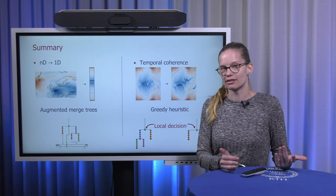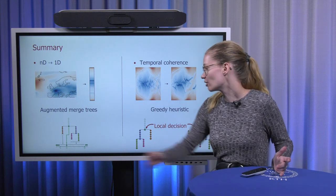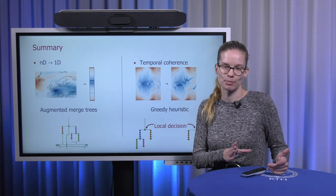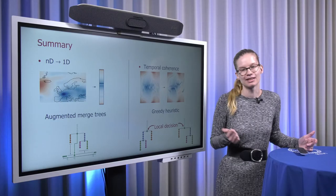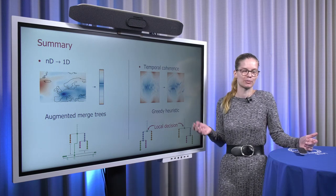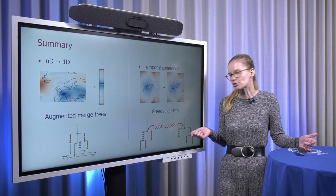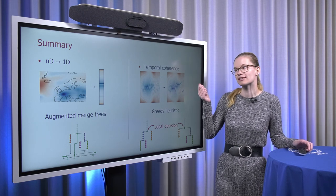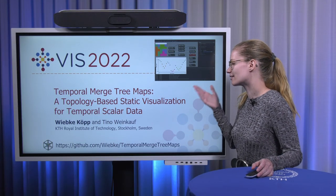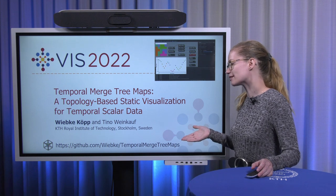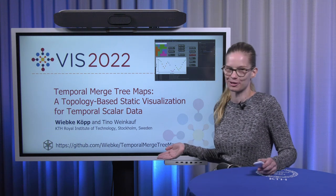So, in summary, we present a new visualization method called temporal merge tree maps that are based on augmented merge trees for creating a mapping between the original scalar field dimensions to one dimension, and then using a greedy heuristic based on making local decisions in all nodes that are encountered while traversing the tree in order to get temporal coherence. If you're now interested in trying this out, then the code is available on GitHub under my name, Wiebke, at the name of the method, temporal merge tree maps. Thank you for listening.